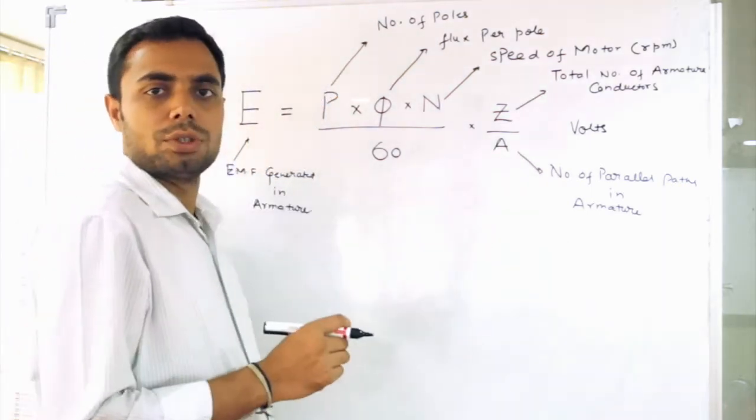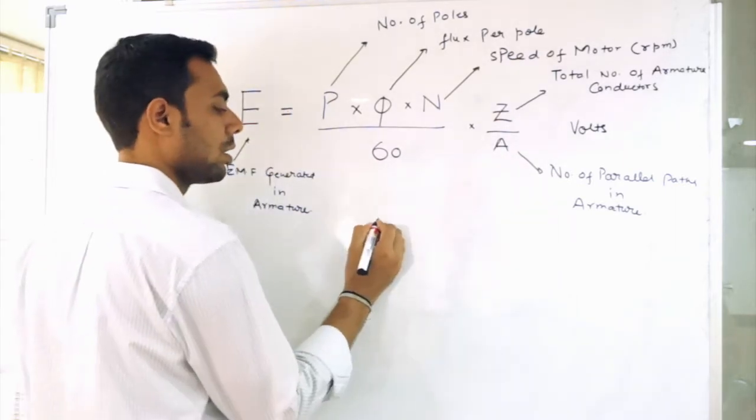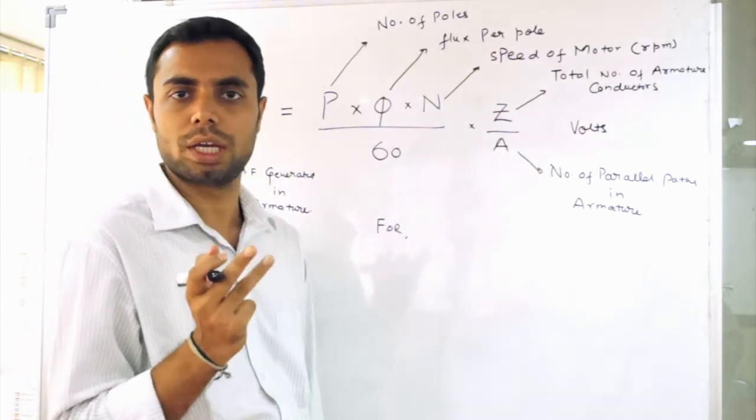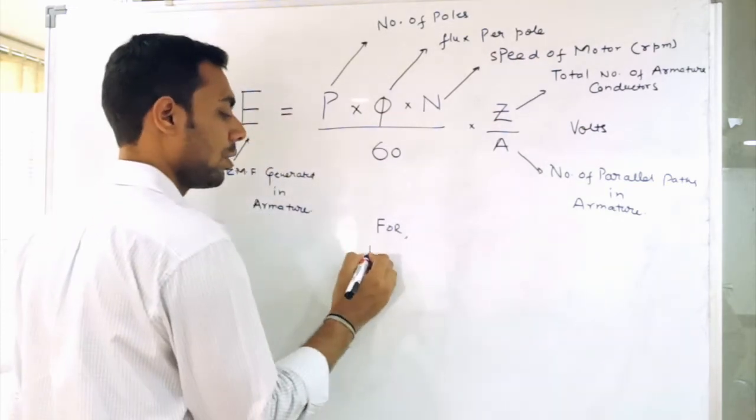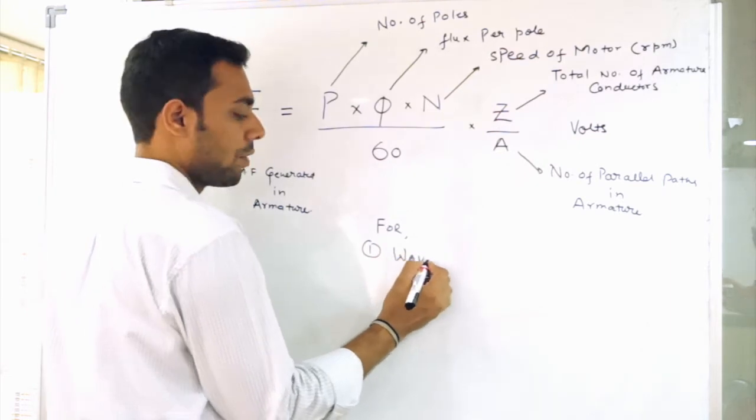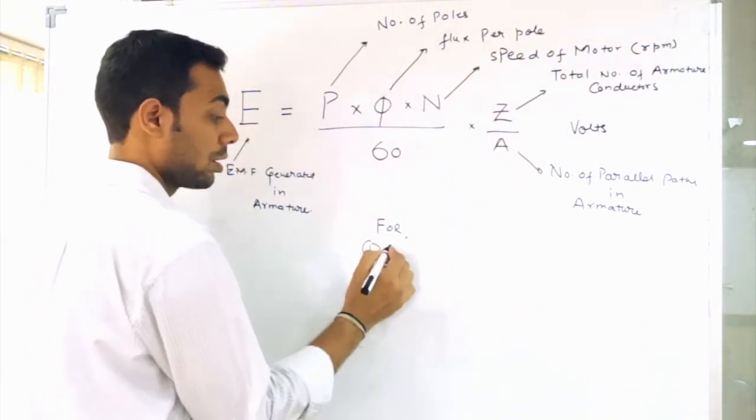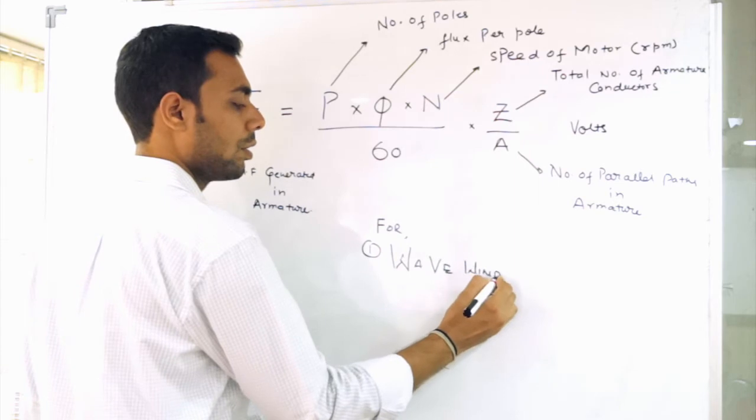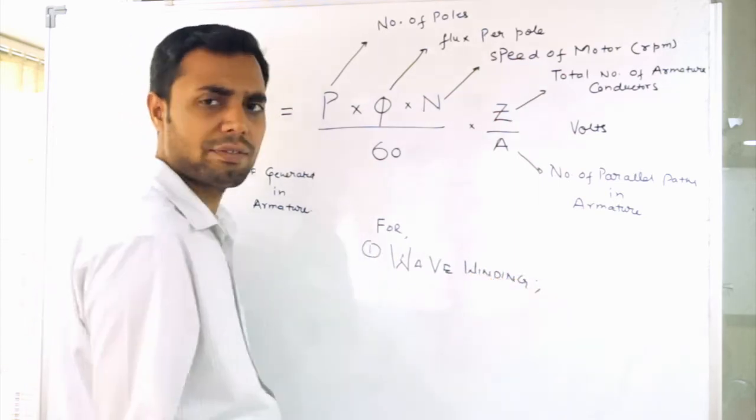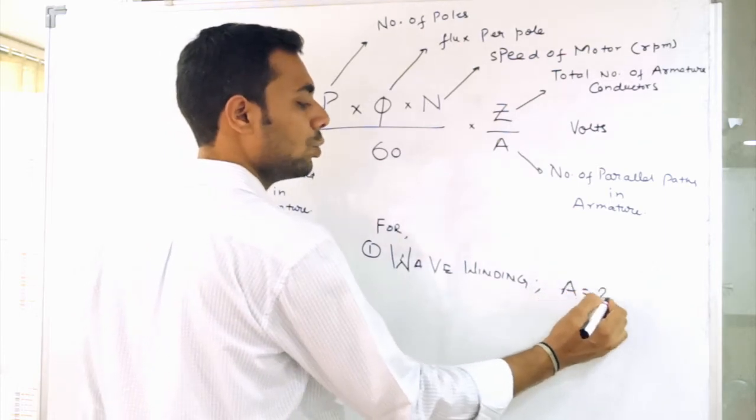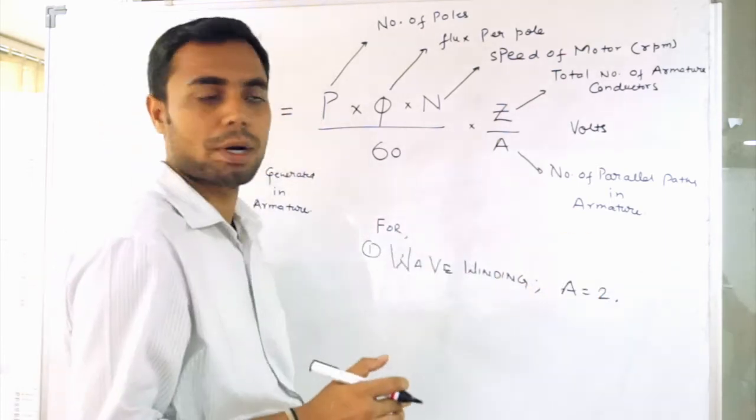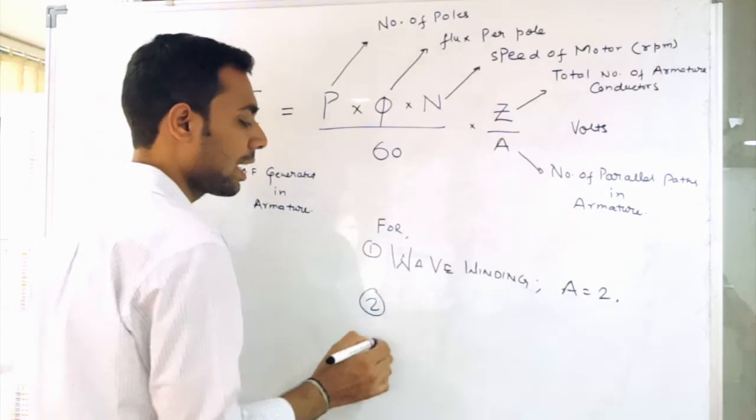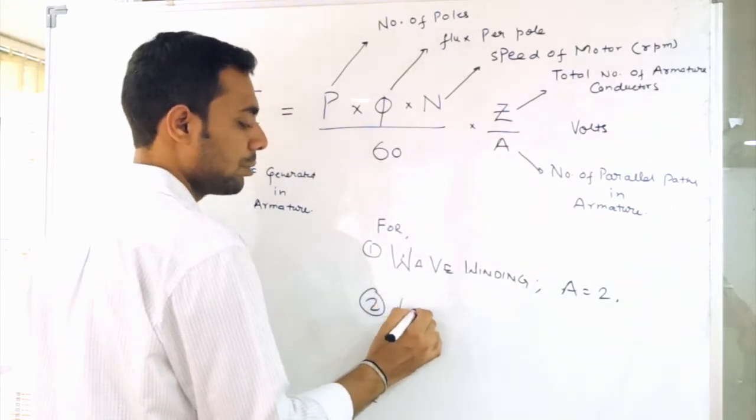Another thing that you need to know to solve this problem is A. Basically there are two types of winding in armature. First is wave winding. For wave winding, A is equal to 2. The number of parallel paths in wave wound DC motor is 2 and second kind of winding that we do in DC motor is lap winding.